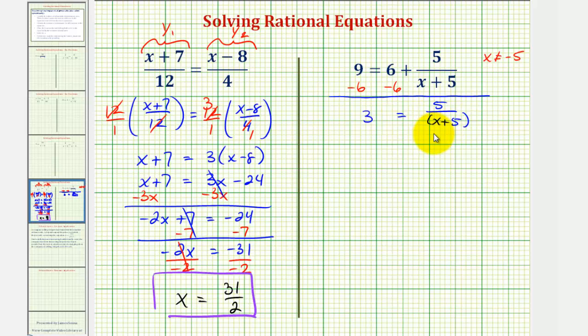Let's use the equation in the form 3 equals 5 divided by the quantity x plus 5. And notice in this form, we can see how the common denominator would be x plus 5. So now we'll multiply both sides of the equation by x plus 5. We'd have 3 times x plus 5 equals 5 divided by the quantity x plus 5 times x plus 5.